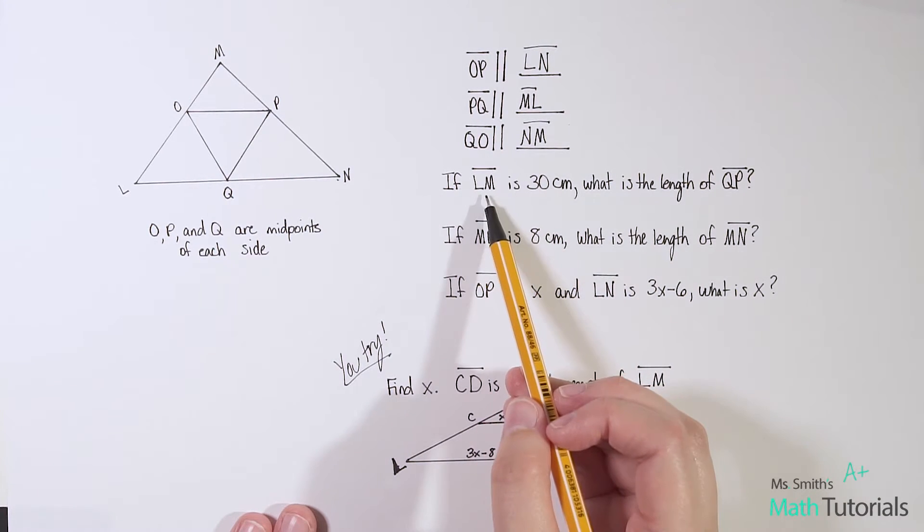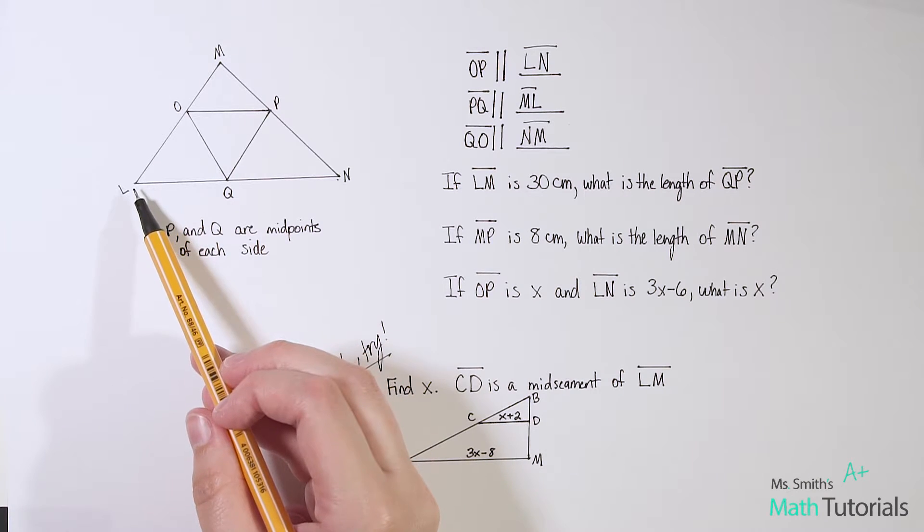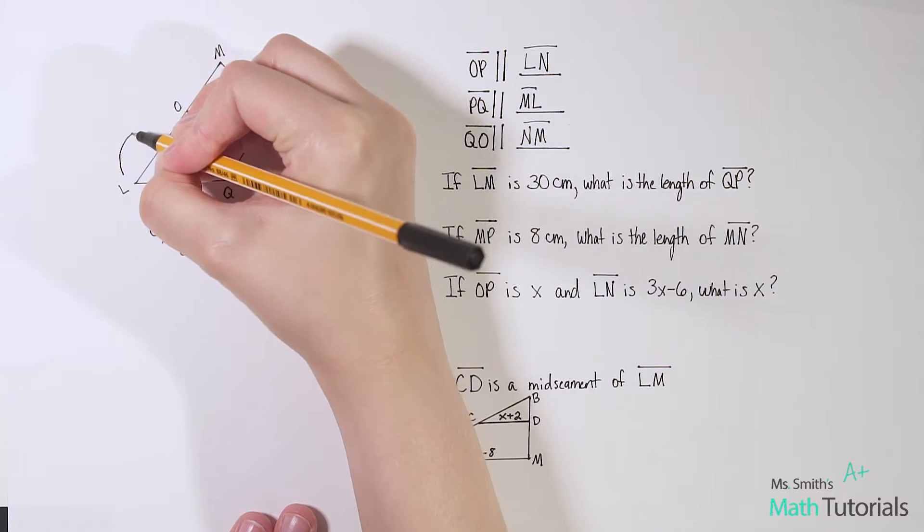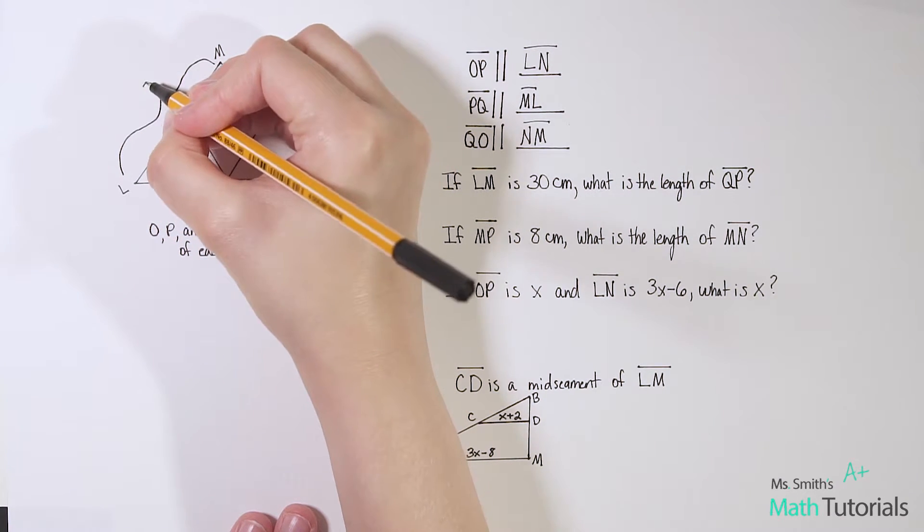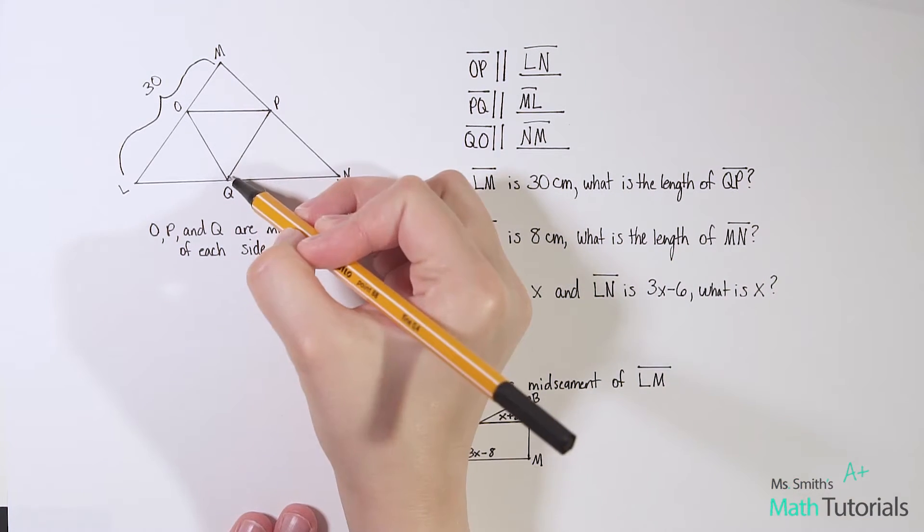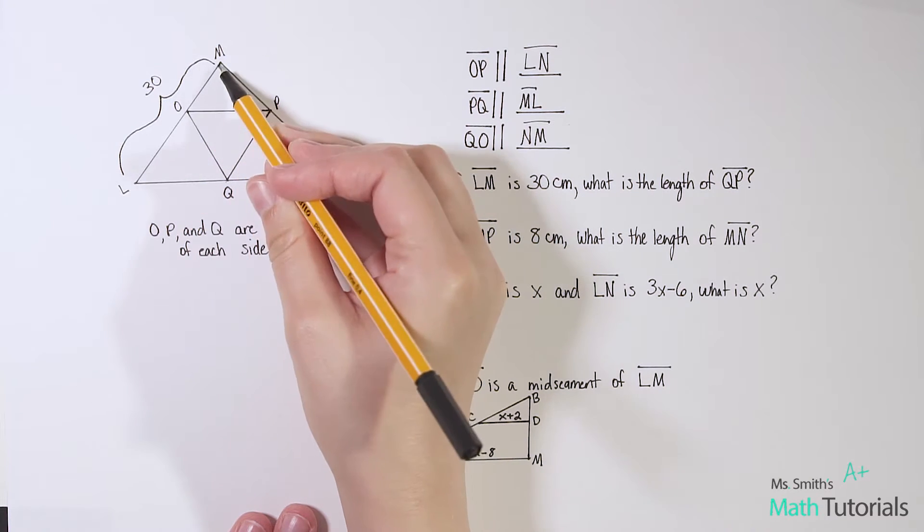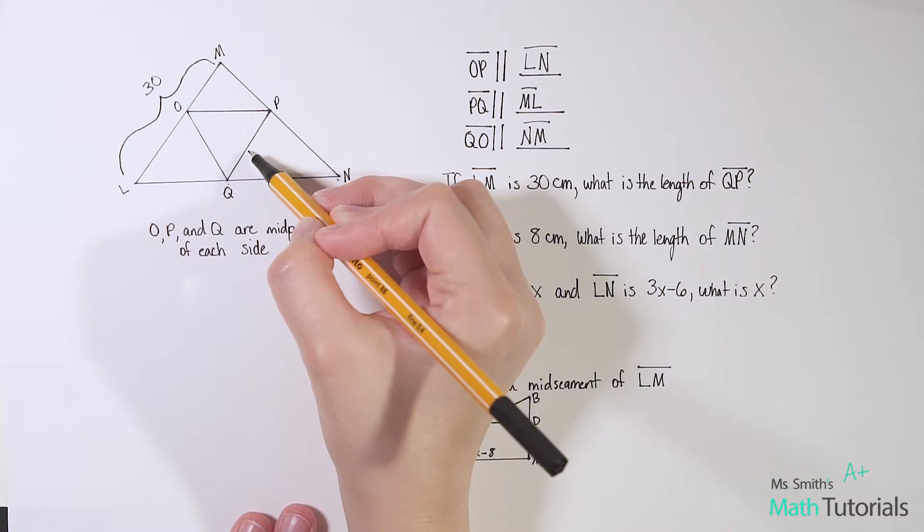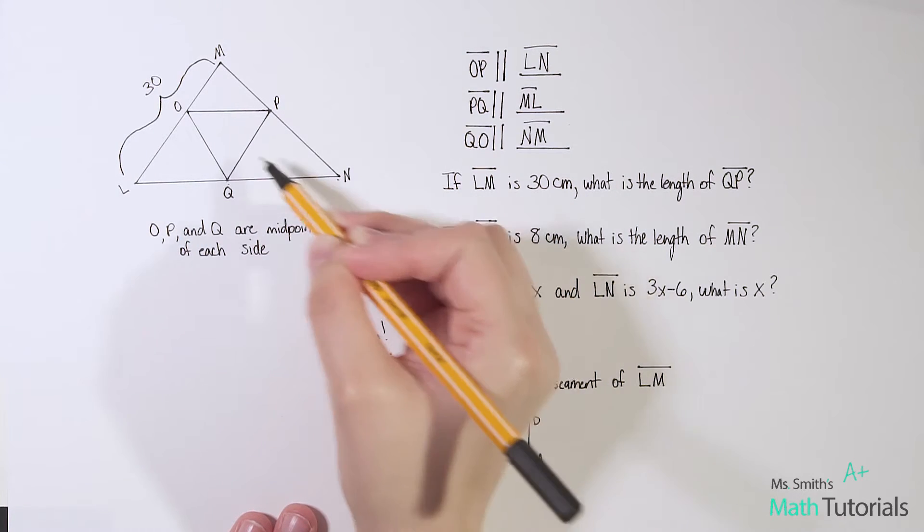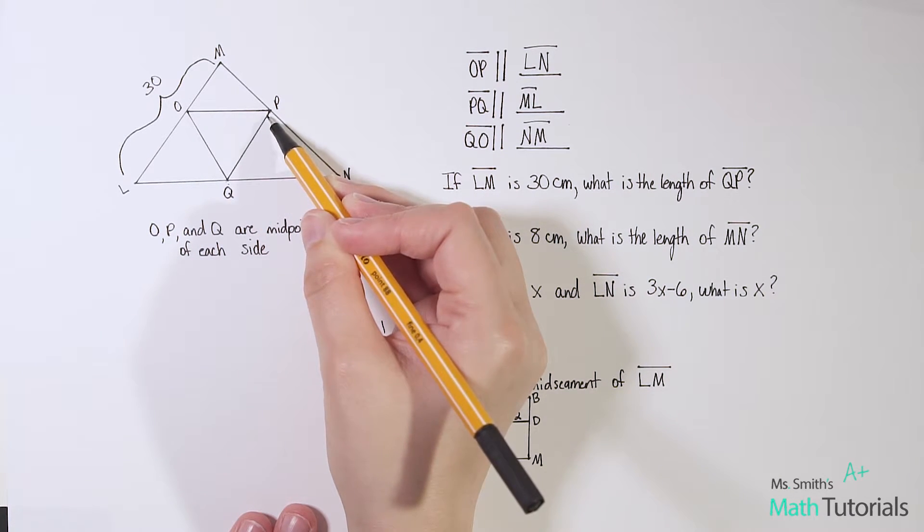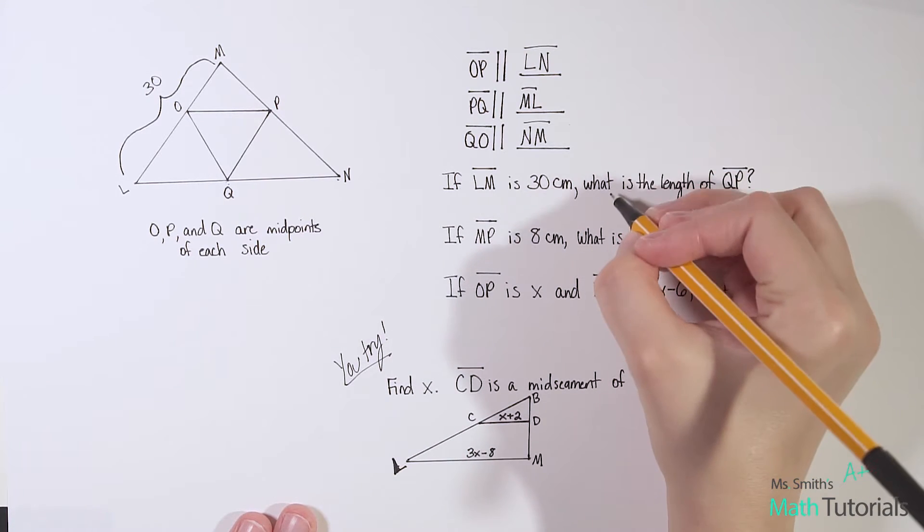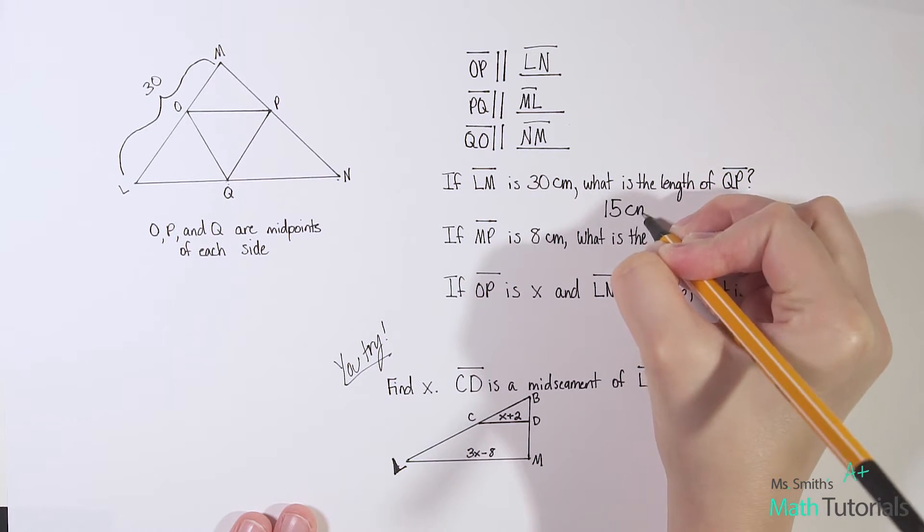So let's do some questions with this. If line segment L, N, so right here, L, N is 30 centimeters. Well, let's label that. So we're saying if this is 30, what is the length of Q, P? So what would be the length of this line segment right here? If this is 30, what is this? Well, we know these two are parallel together. We know that Q and P are the mid-segments of their lines. So therefore, I know that Q, P has to be one-half of 30. So 30 divided by 2 is 15 centimeters.